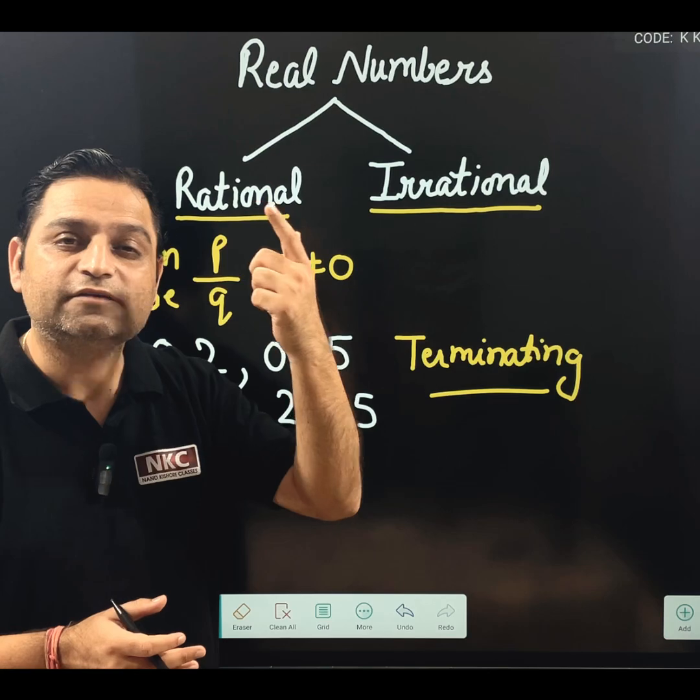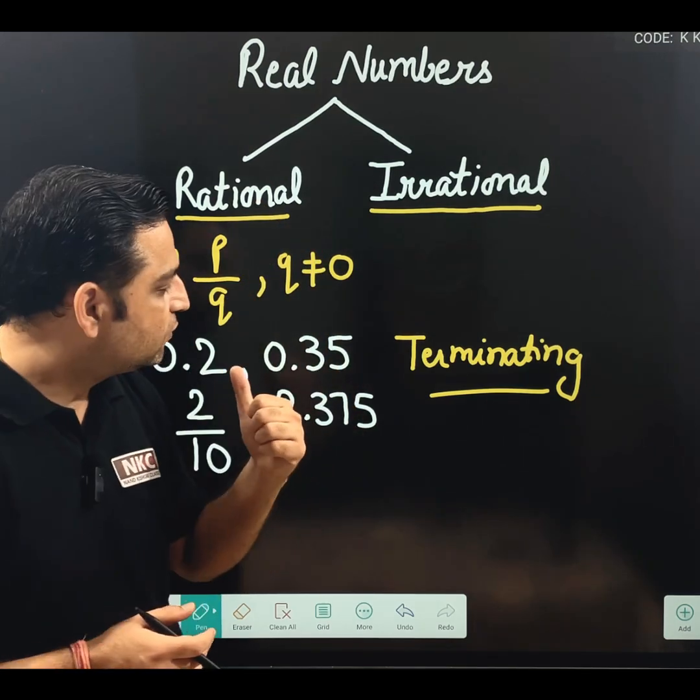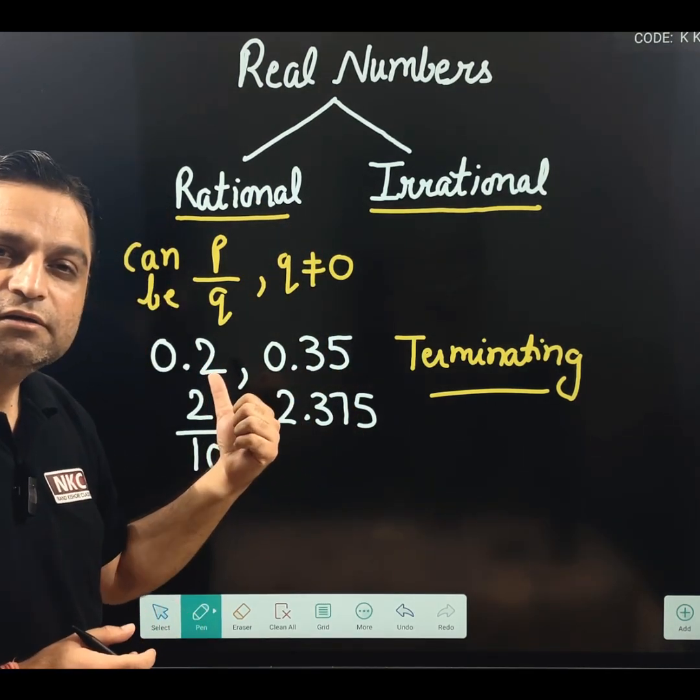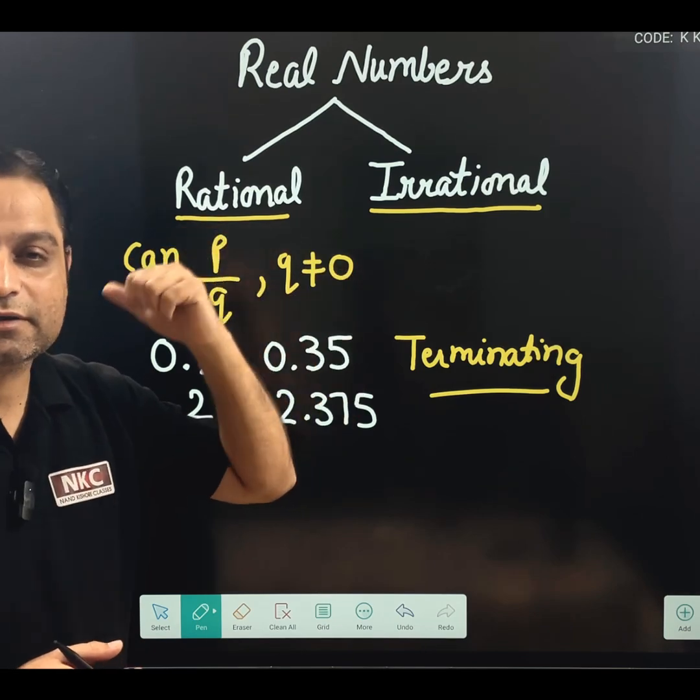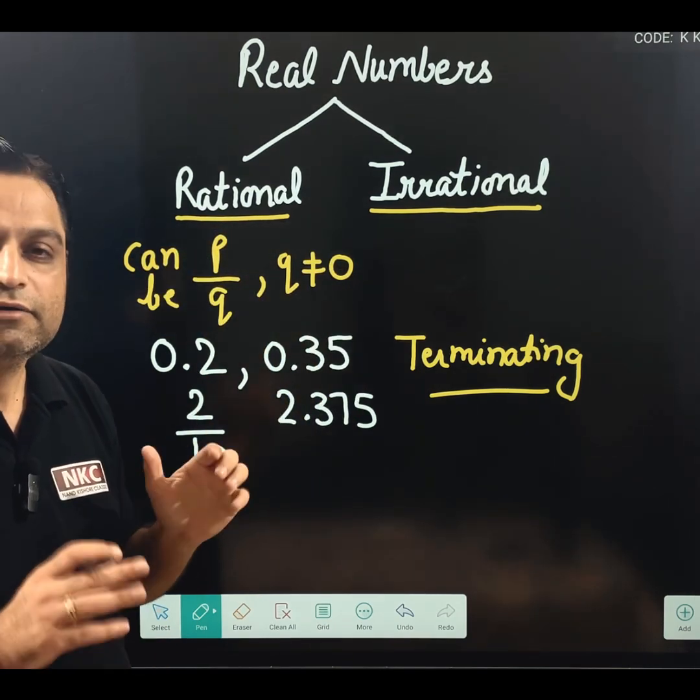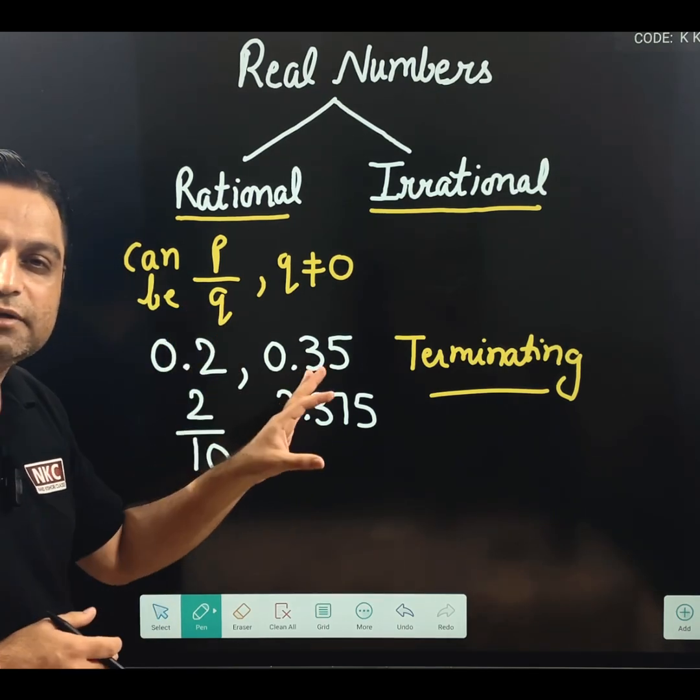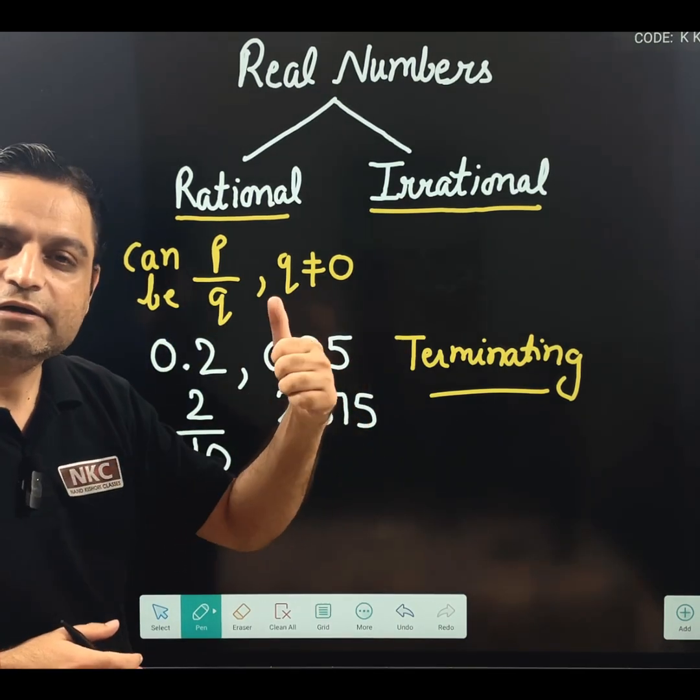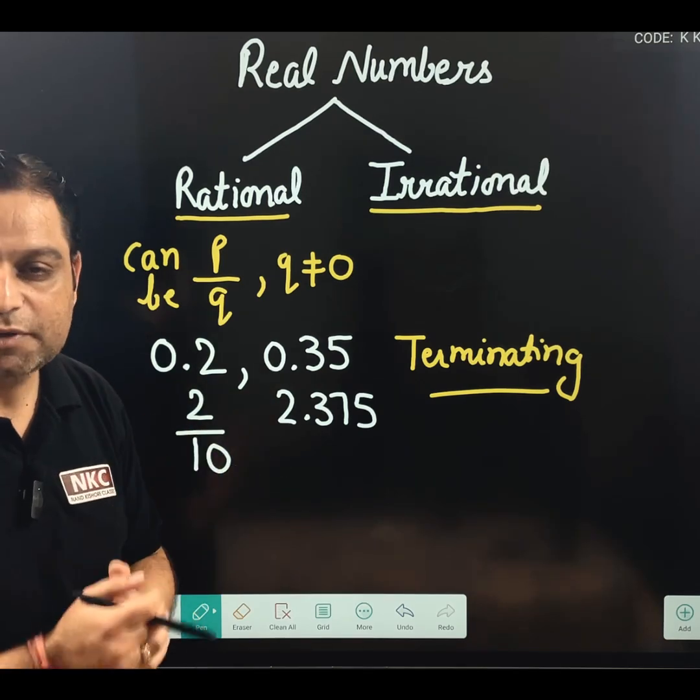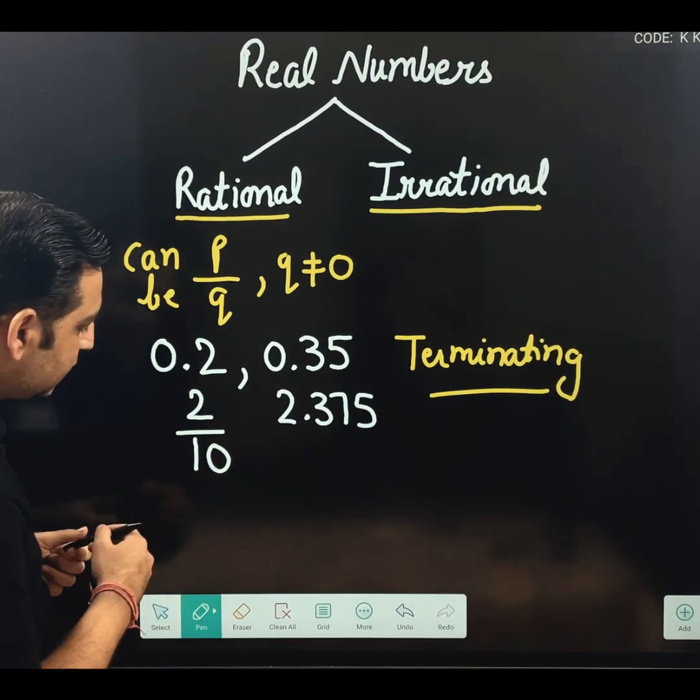Now, one question must be arising in your mind. That sir, if this is terminating, then what happens to non-terminating? I will come to that but firstly try to understand that all the terminating decimal expansions are rational numbers because they can be written in the form of P upon Q.